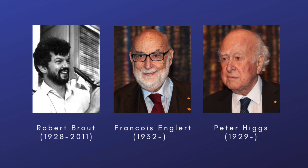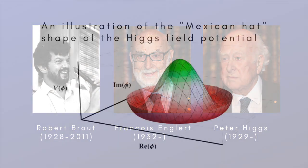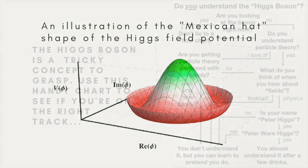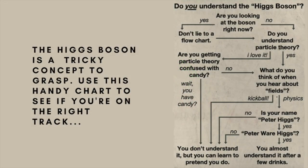But that's just theory. How can we tell if the Higgs field really exists? The answer is that, like all fields, the Higgs field has an associated particle — the Higgs boson. If you imagine the Higgs field to be like a sea, the Higgs boson is like a wave on the surface. The theory behind the Higgs boson doesn't specify what its mass might be, but gives only a rough idea of the range in which it might lie. What was clear, however, was that if the Higgs boson existed, it could be manufactured only through colliding particles at very high energy.